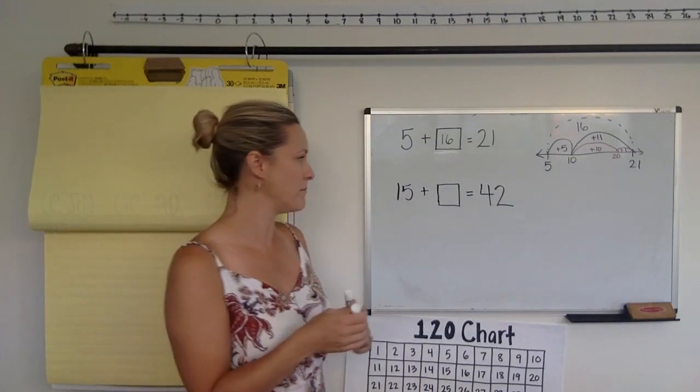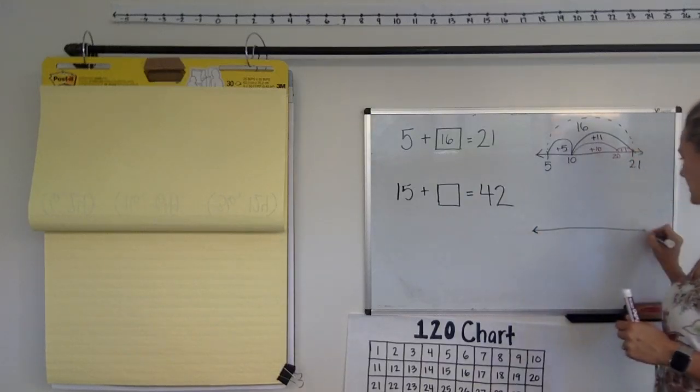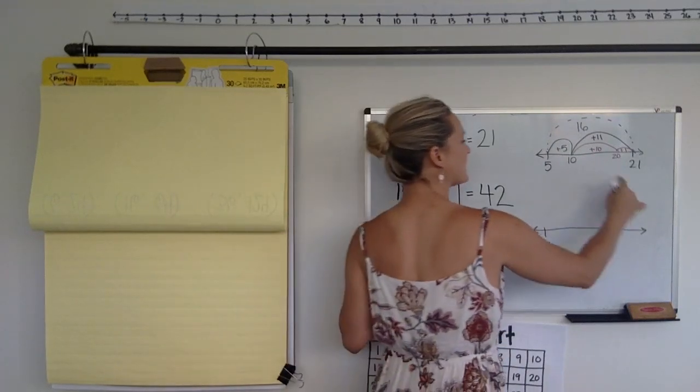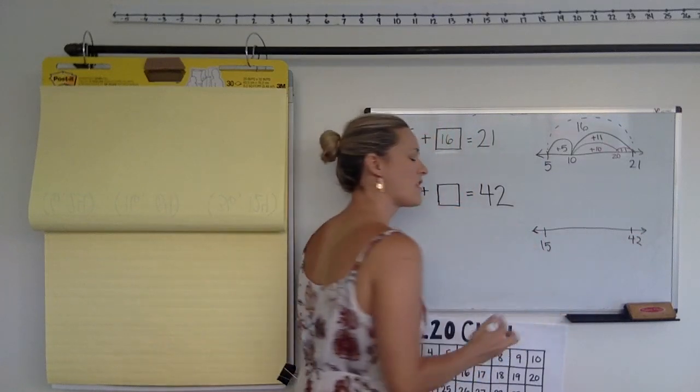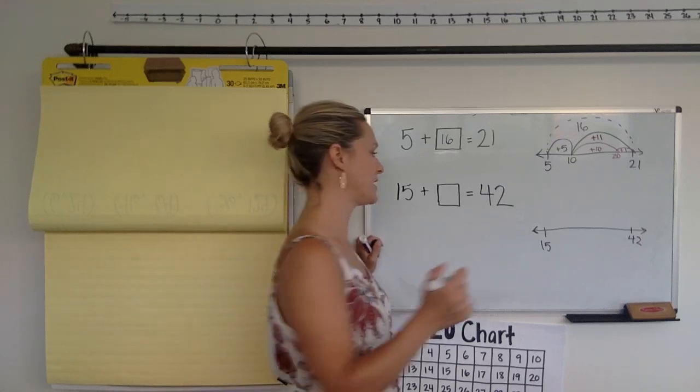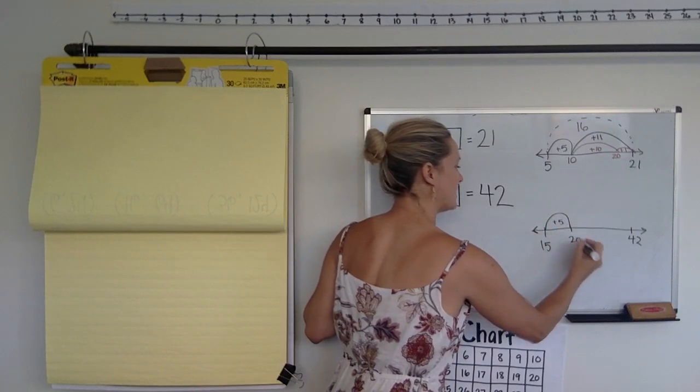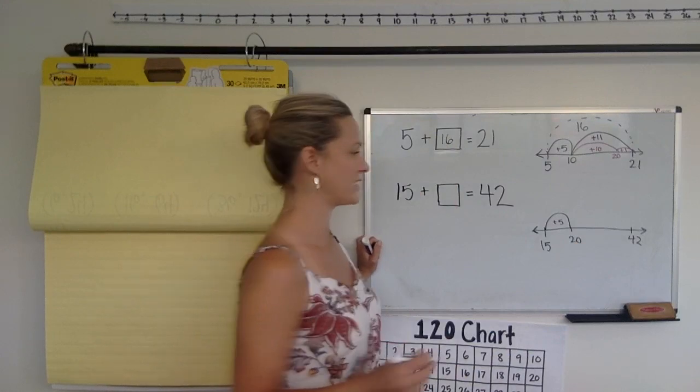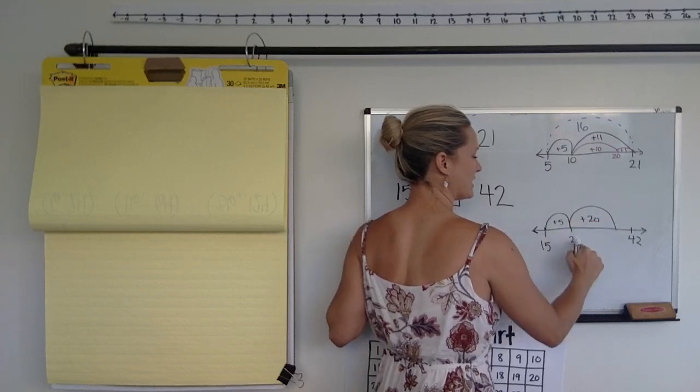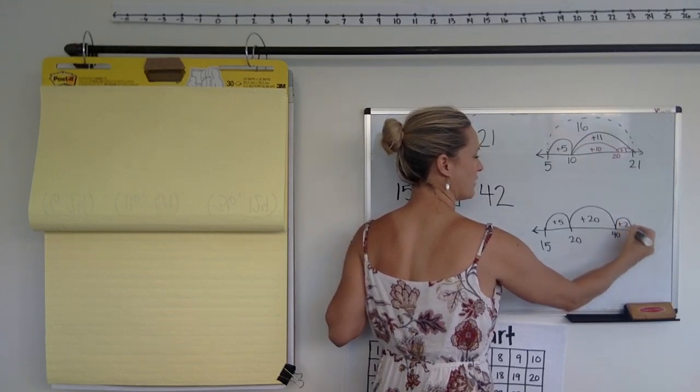I'm going to guess that maybe there was another number line. So, maybe you did 15 here. And you know you need to get to 42. And I'm going to guess your first hop was a hop of 5 to get to a friendly number. So, 15 plus 5 is 20. And maybe you knew that 20 plus 20 would give us 40, plus 2 more would give us 42.